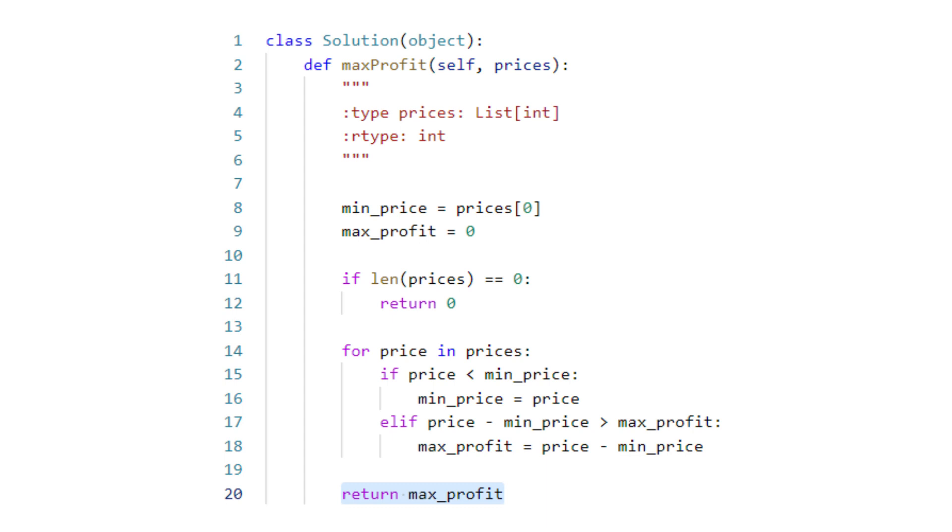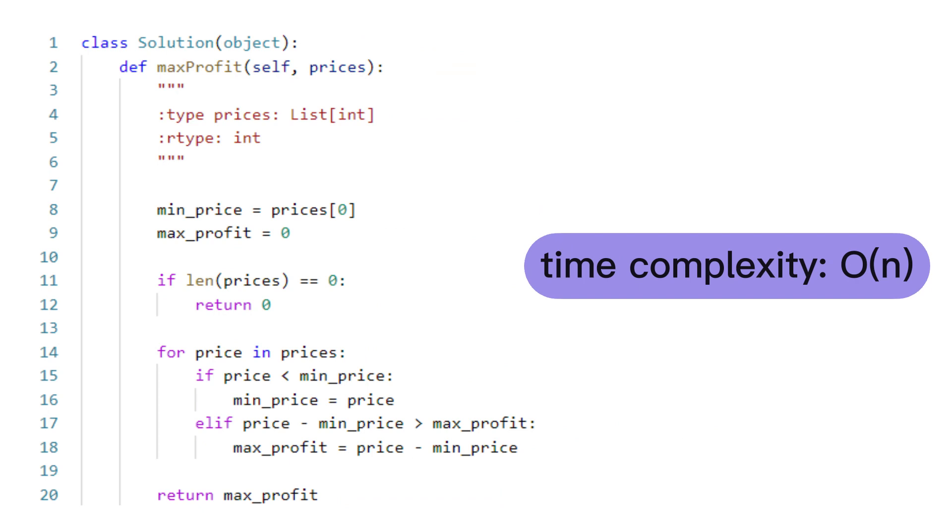If we cannot make any profit, the maximum profit will be zero. The time complexity is O(n), where n is the length of the prices array.